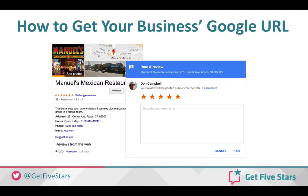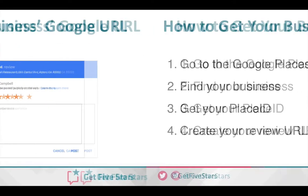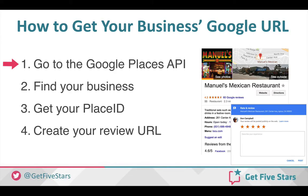So how do we get this URL? The first step is to go to the Google Places API — I'll give you that URL in just a second. Go in and find your business, then grab your place ID, and then you can create this URL that you can use and distribute and give to your customers.